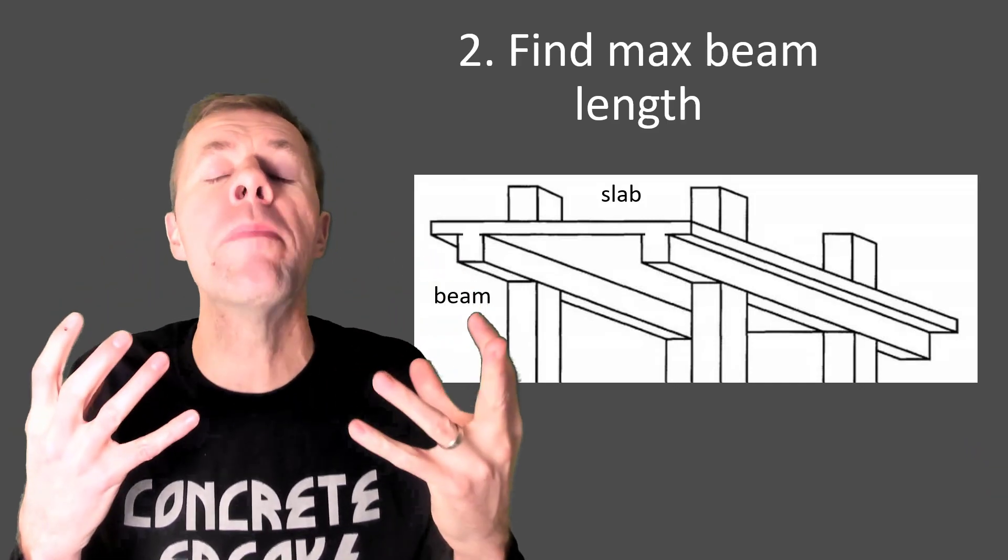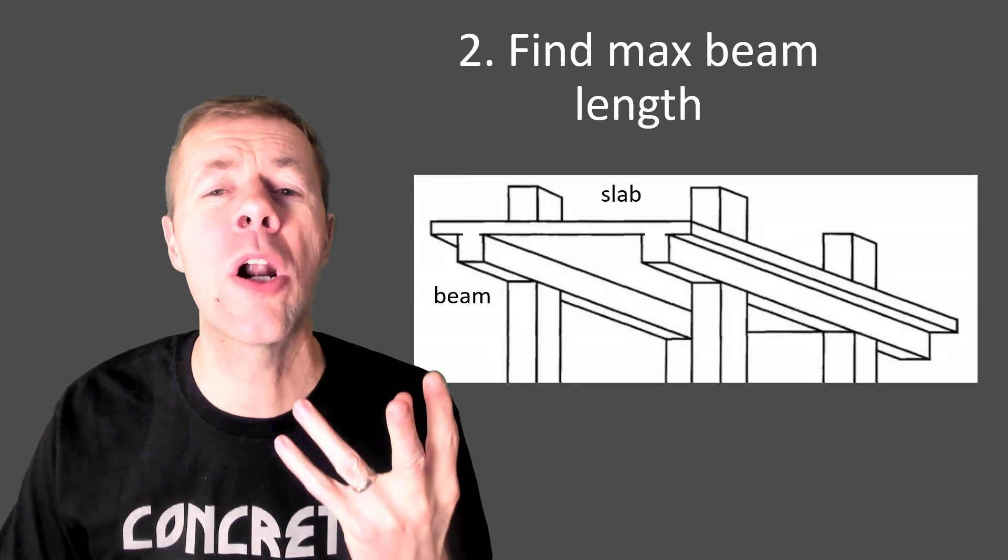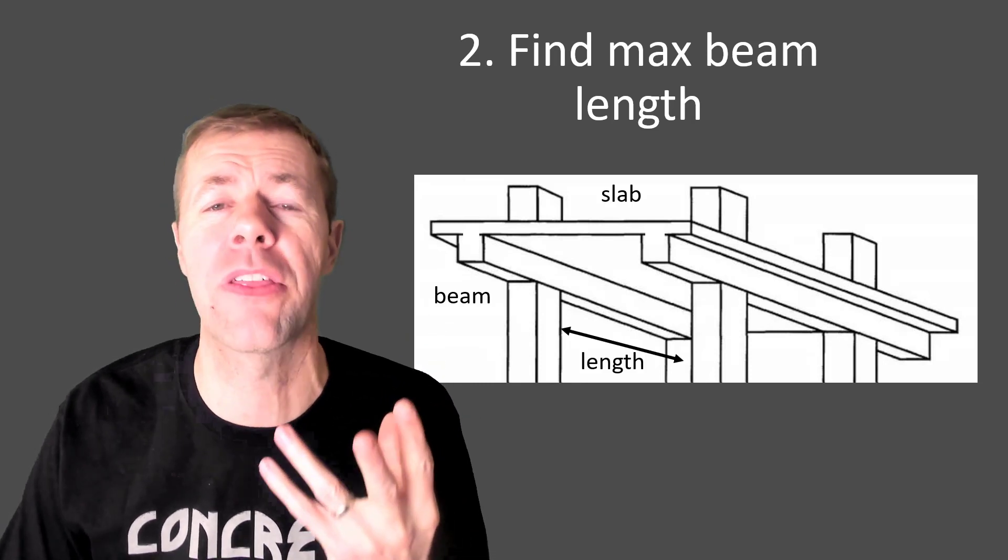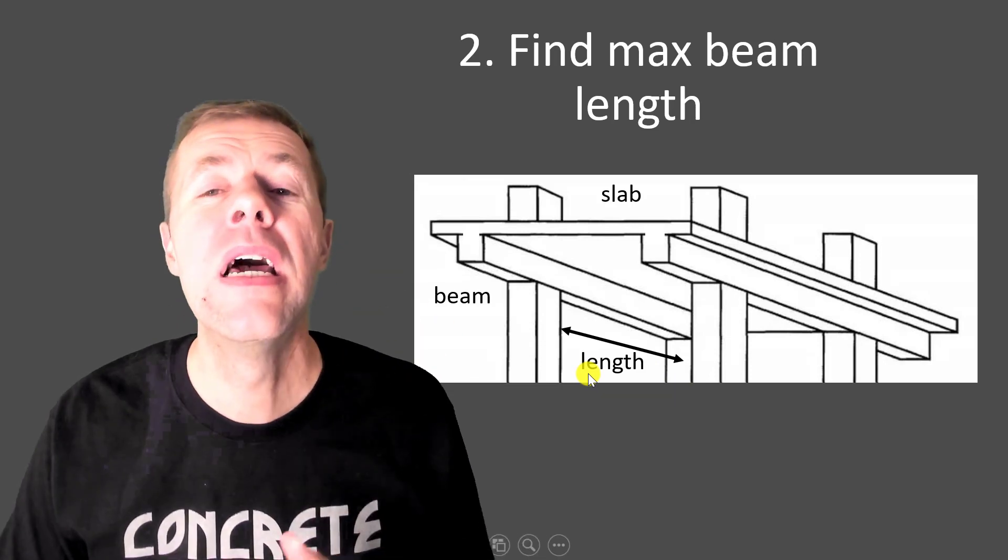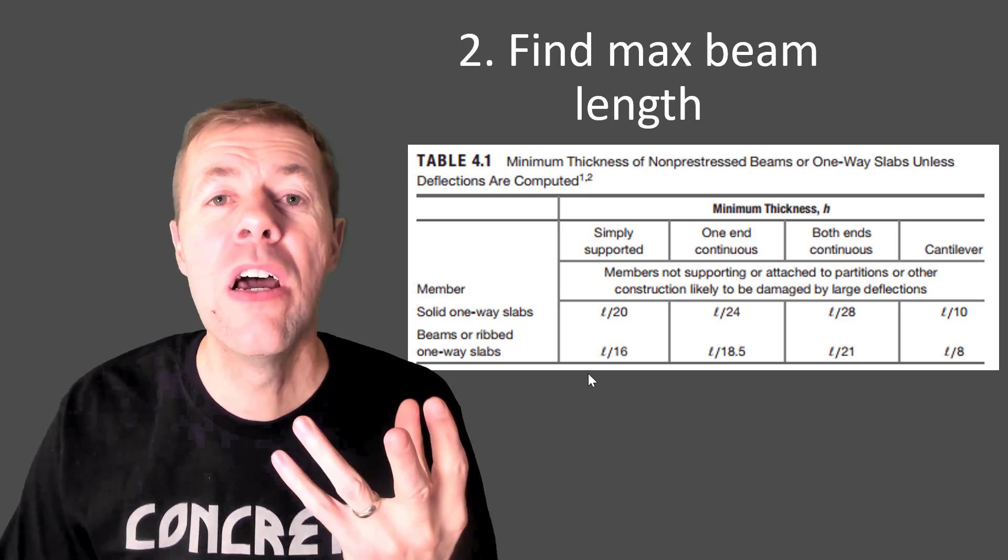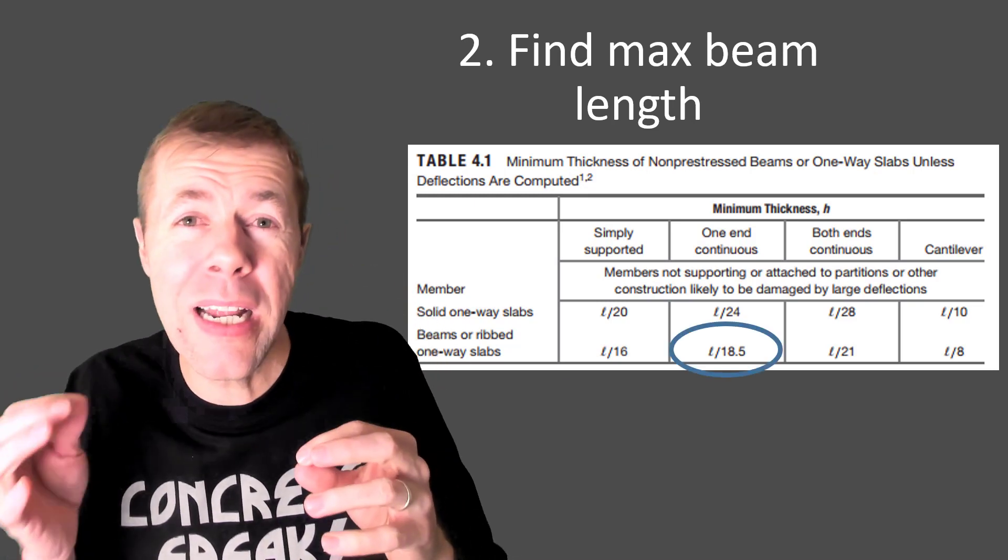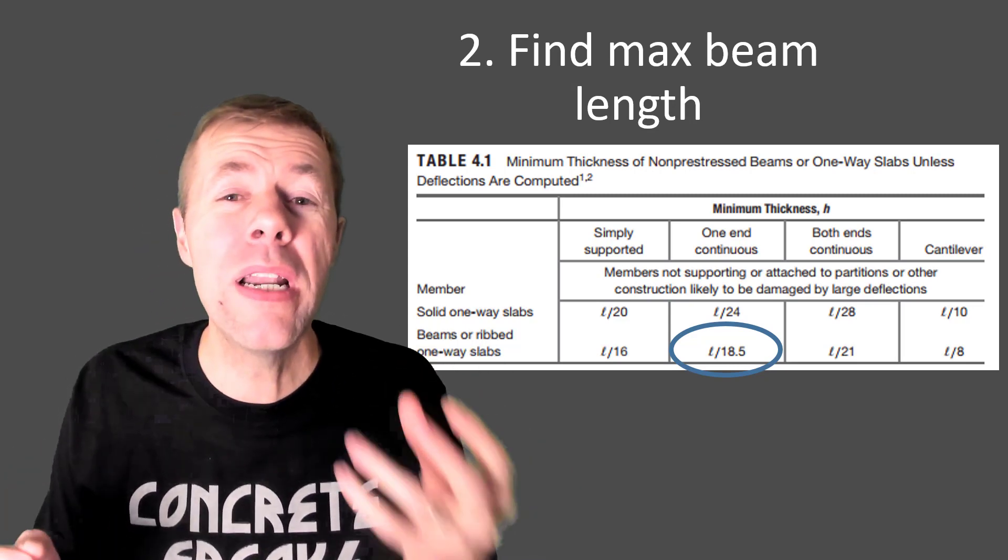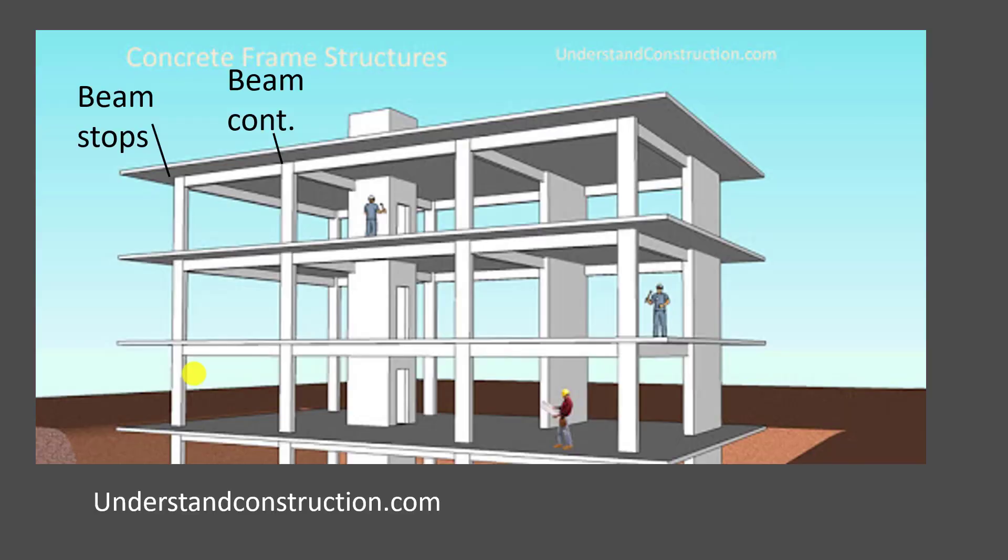So next we have to worry about our beams. We got our slab kind of figured out. Now we're looking at our beams. We have to find this length, the distance between the two columns. We got to get it right. Now we go back to our same table and again we're able to use it for the beams and usually this is the one. One end continuous and one end not. That's usually what happens on the edge of our structure.